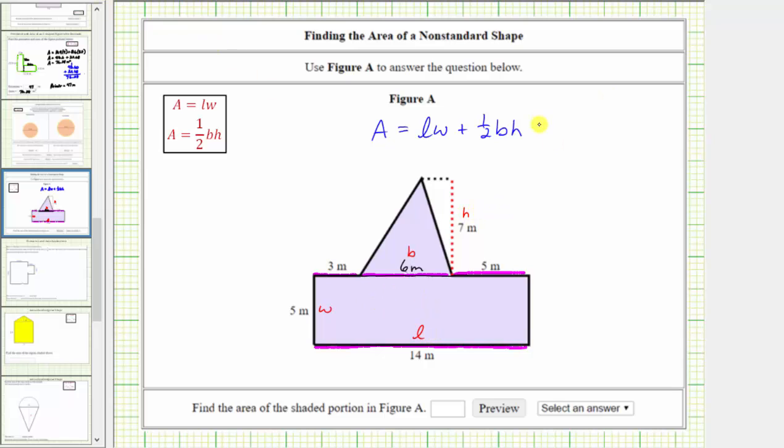The area of the polygon is equal to the area of the rectangle, which is 14 meters times 5 meters, plus the area of the triangle, which is one-half times the base, which is 6 meters, times the height, which is 7 meters.